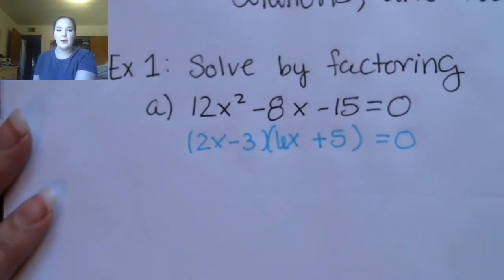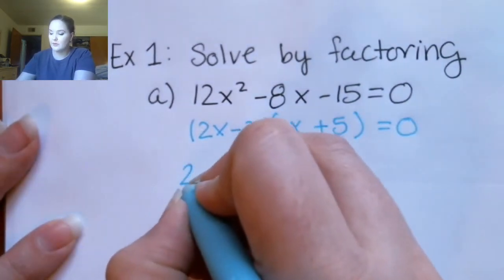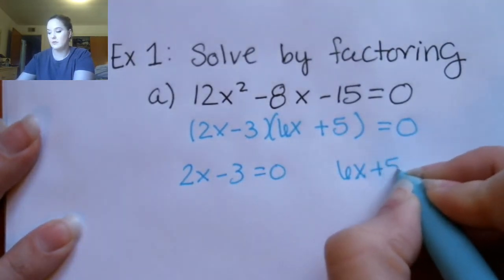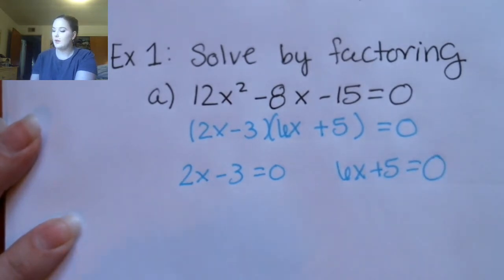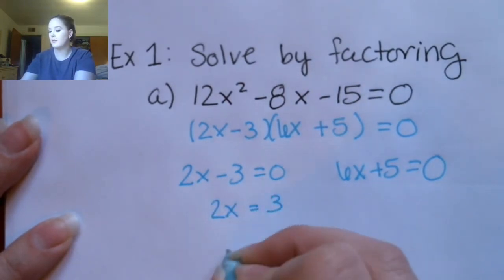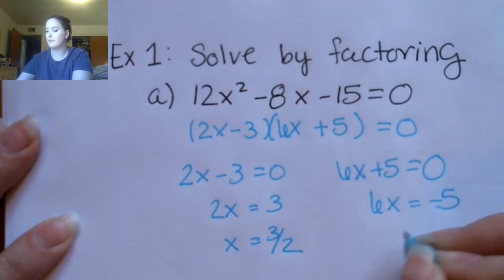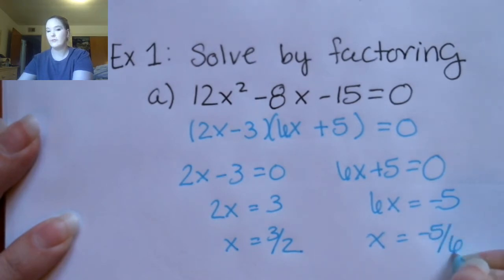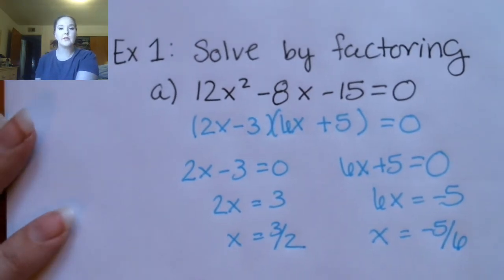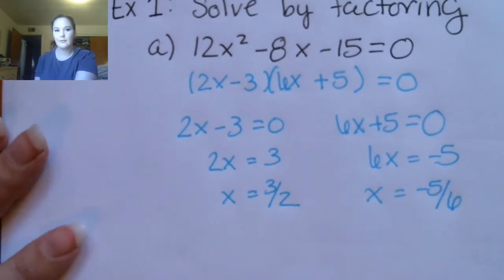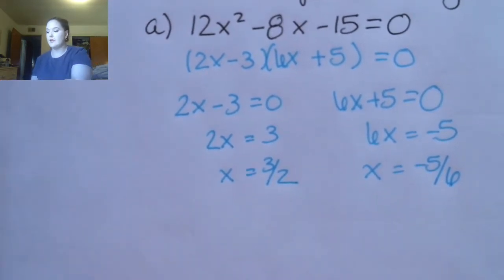The next step in solving by factoring is to set each factor equal to 0. Then I'm going to finish solving each one of these linear equations. I'm going to leave my solutions as fractions — I'm not going to rewrite them as decimals — and we can see that I have two real number solutions. Let's look at another example of this.